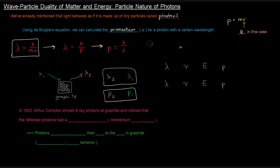This means that momentum is inversely proportional to the wavelength. So if we have a smaller wavelength, we have a larger momentum — dividing by a smaller wavelength makes the momentum's value bigger. The opposite is also true: if you have a larger wavelength, you have a smaller momentum.